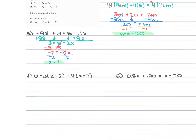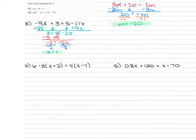For number 4, we have 6 minus 3 times the quantity X plus 2 is equal to 4 times the quantity X minus 7. The first thing we know we have to do is distribute. So we're going to do negative 3 times X, which gives us negative 3X, and negative 3 times 2 is negative 6. Then 4 times X is 4X, and 4 times negative 7 is negative 28.